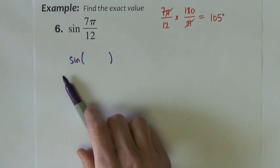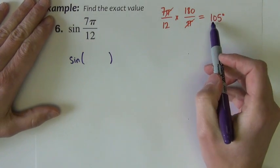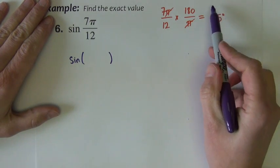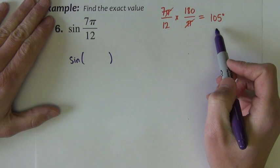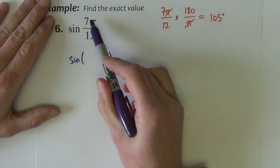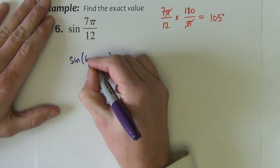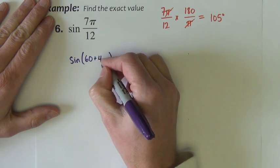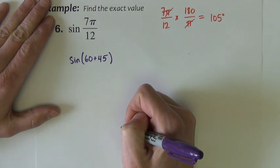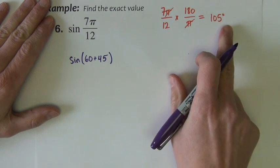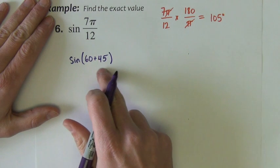It's going to be easier for me to come up with two numbers that add or subtract to 105 than it is to think of two numbers that add or subtract to 7 pi over 12. So using 105, I could do 60 plus 45. And since that's the same as that, this is going to work out just fine.